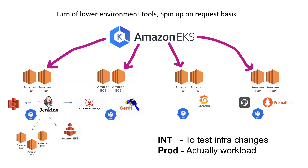The first one is turning off lower environment tools and spinning them up on request. You can see on the screen — this is one of the projects I worked on where we used to provide build tools and SCM tools for the developer community. The infrastructure used Amazon EKS, on top of which we had separate node groups for each tool. In each node group, we launched EC2 instances, and on top of those we deployed Jenkins, Gerrit, Grafana, and Prometheus as pods. Each tool had a different node group because different tools have different resource requirements.